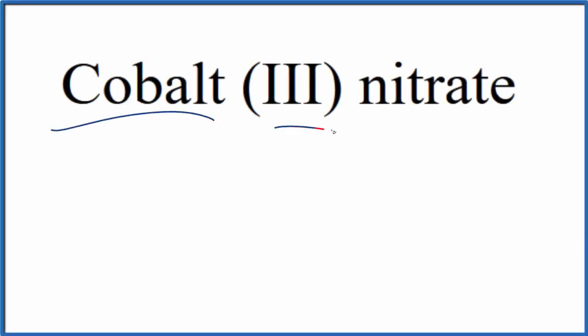To write the formula for cobalt 3 nitrate, the first thing we'll do is write the element symbol for cobalt. That's just Co. In this Roman numeral 3 here in parentheses, that means the cobalt is 3 plus.